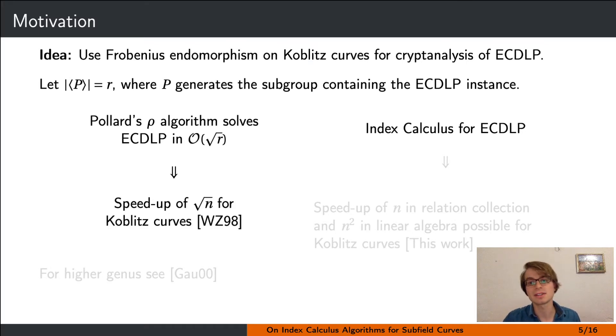In 1998, Wiener and Zuccherato presented how the rho algorithm could be improved on Koblitz curves by a factor square root of n, where n was the extension degree of the field. As an aside, this result was also presented at SAC in 1998.